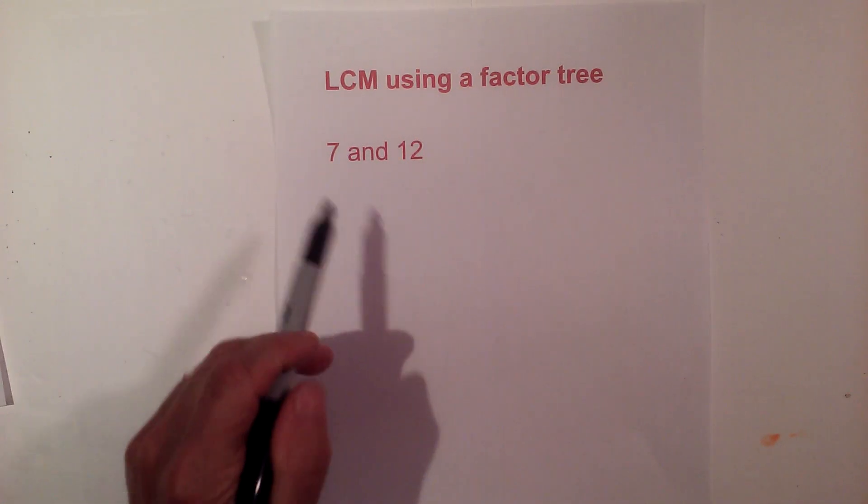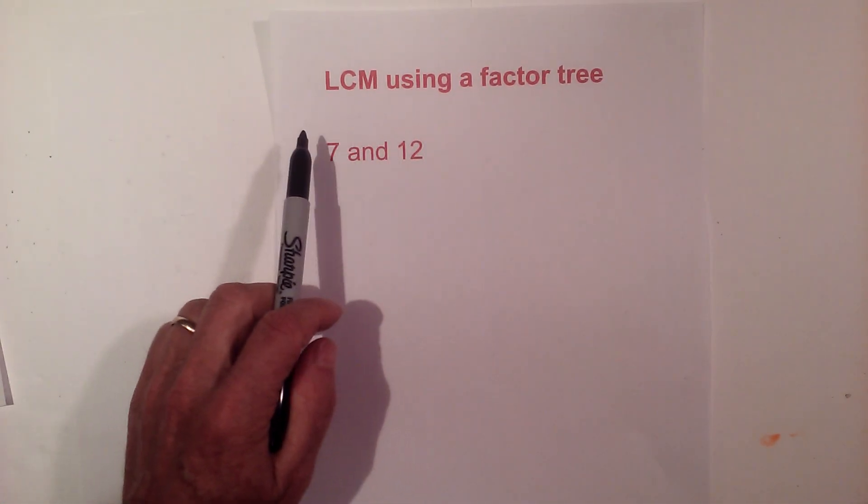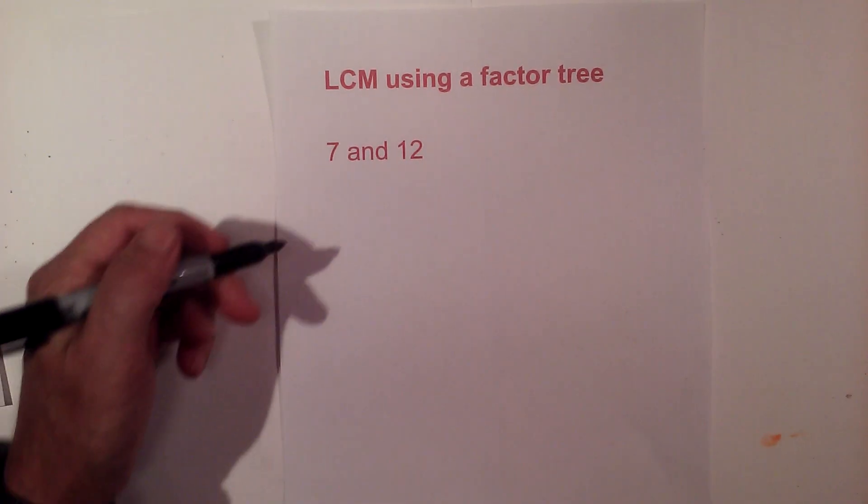In this video, let's find the lowest common multiple or the least common multiple of 7 and 12. I like to use a factor tree.